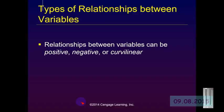When we describe relationships between independent and dependent variables, we tend to characterize them as positive or negative. However, sometimes we want to look to see if a relationship could be curvilinear.